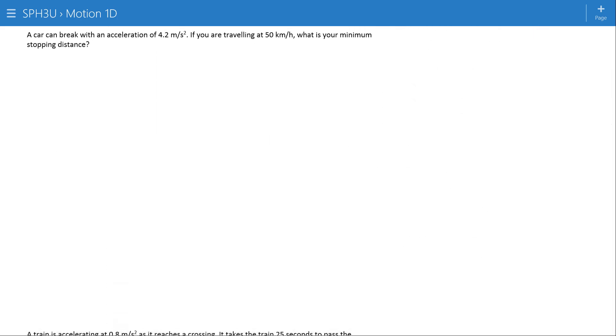The car can brake with an acceleration of 4.2 meters per second squared. If you're traveling at 50 kilometers an hour, what is your minimum stopping distance? So again, we're looking for words here that mean numbers. What is your minimum stopping distance implies that you stop, so you have to make your V2 zero.